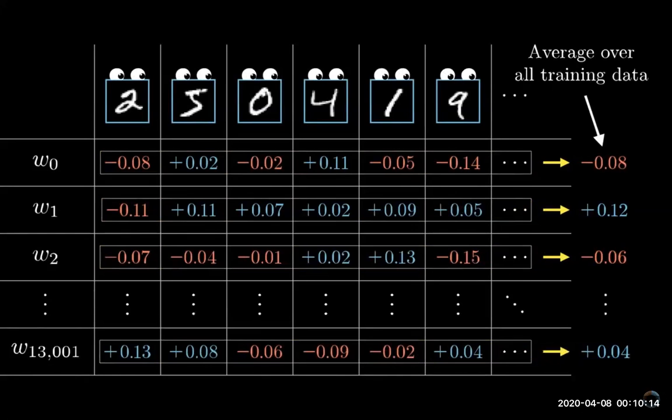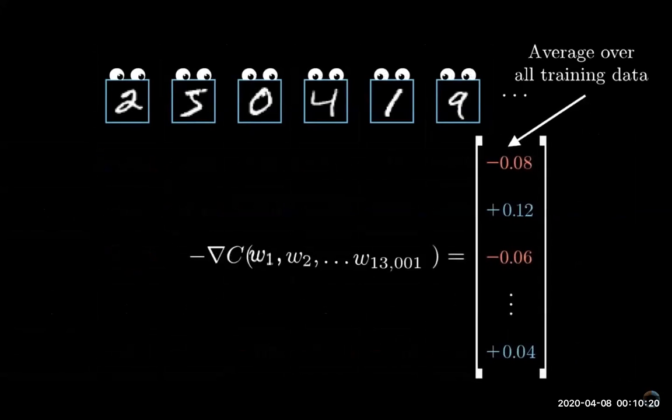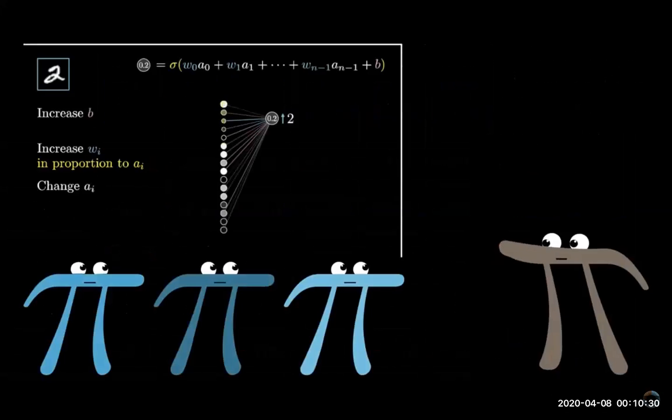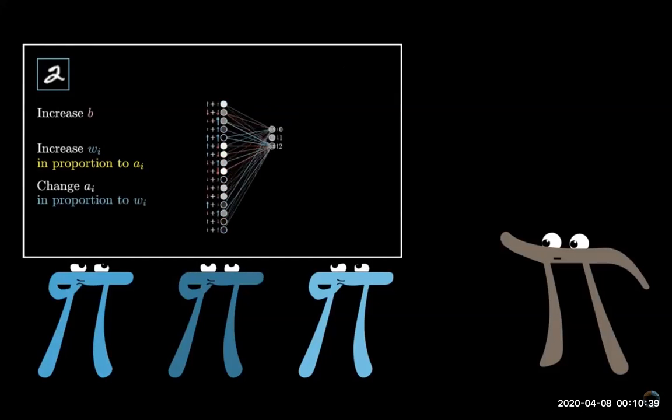This collection here of the average nudges to each weight and bias is, loosely speaking, the negative gradient of the cost function referenced in the last video, or at least something proportional to it. I say loosely speaking only because I have yet to get quantitatively precise about those nudges, but if you understood every change that I just referenced, why some are proportionally bigger than others and how they all need to be added together, you understand the mechanics for what back propagation is actually doing.